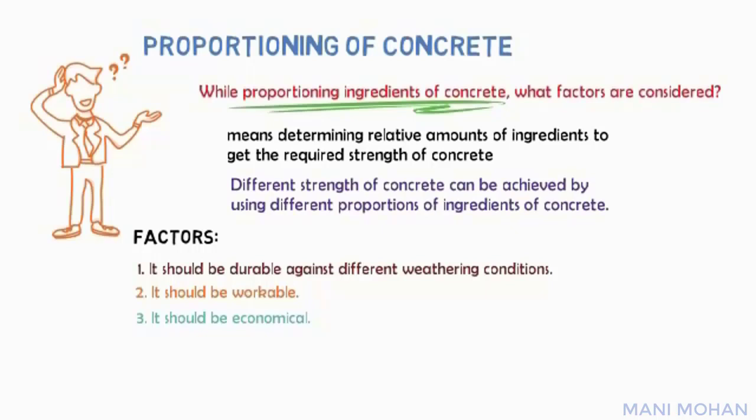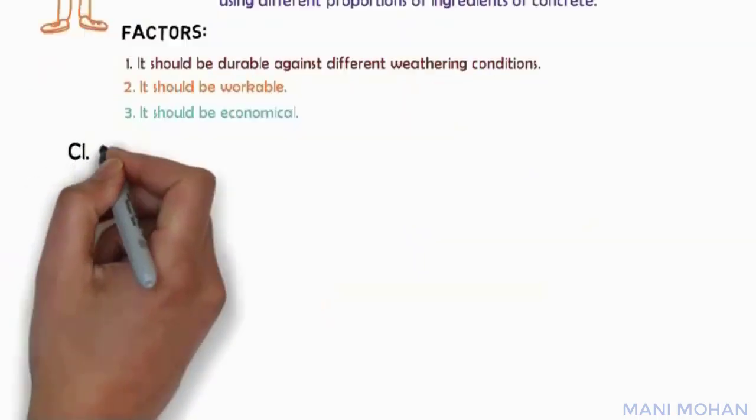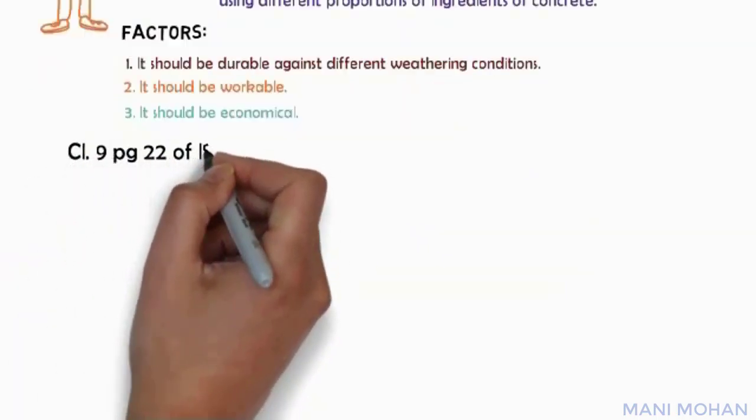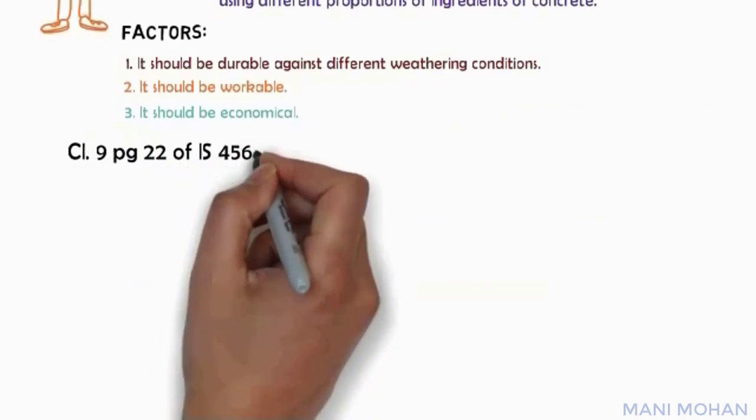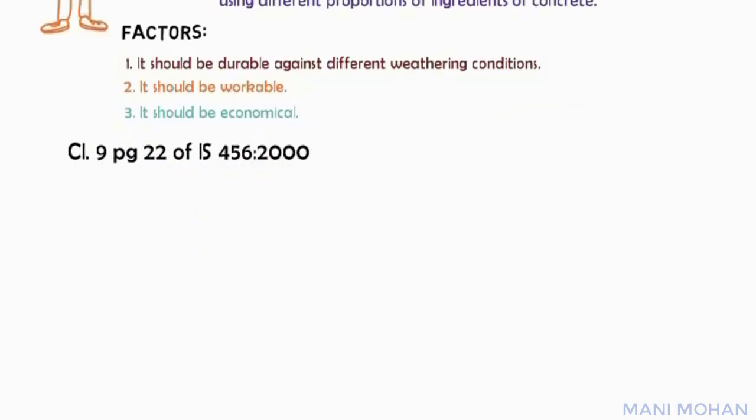A variety of concrete mixes can be prepared to obtain a specified compressive strength. The economical alternative is one that requires the minimum possible cement for a given concrete strength. Clause 9, page 22 of IS 456-2000 provides guidance on concrete mix proportioning.